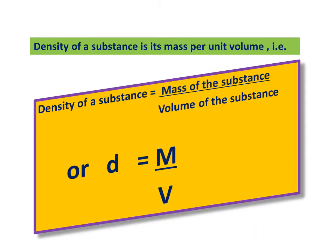Density of a substance is its mass per unit volume. That is, density of a substance is equal to mass of the substance divided by volume of the substance, or D is equal to M divided by V.